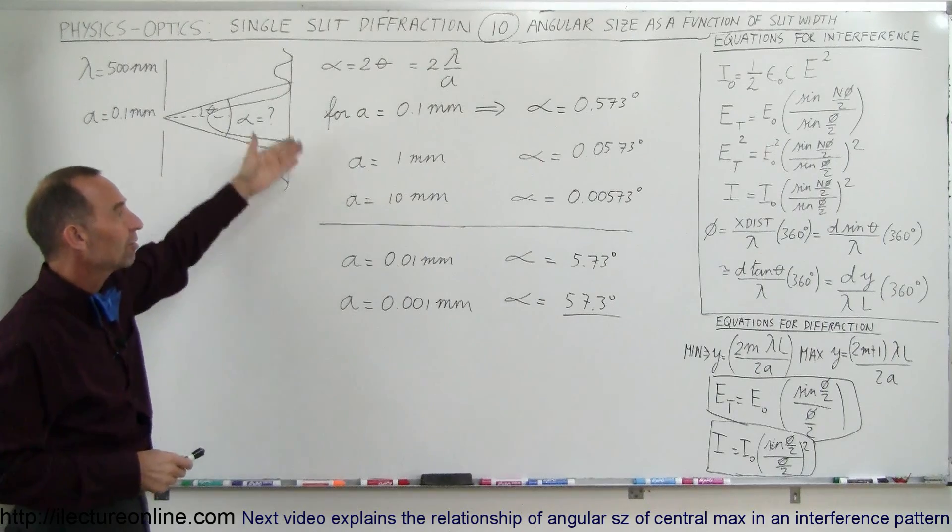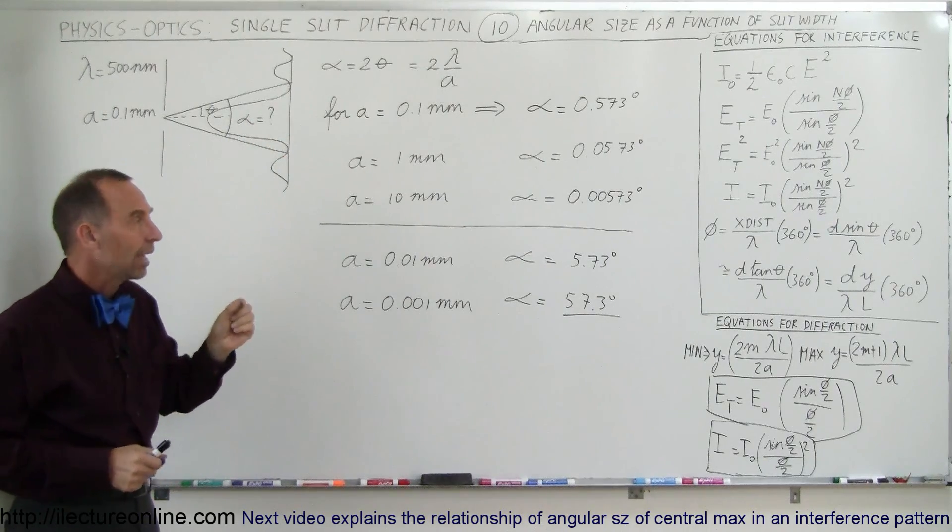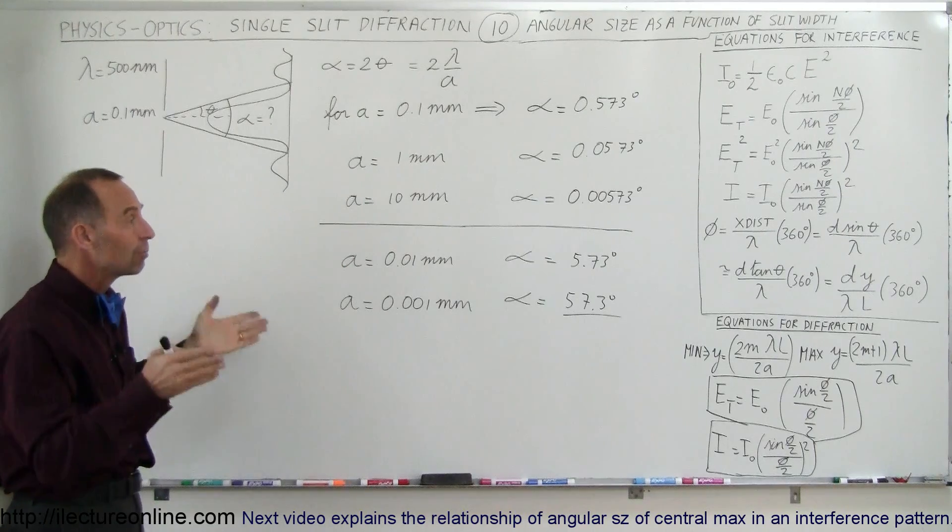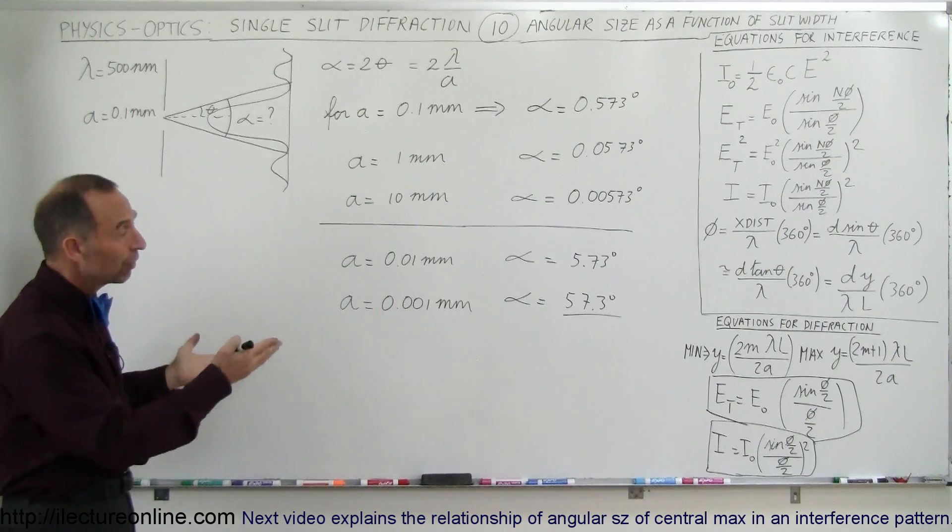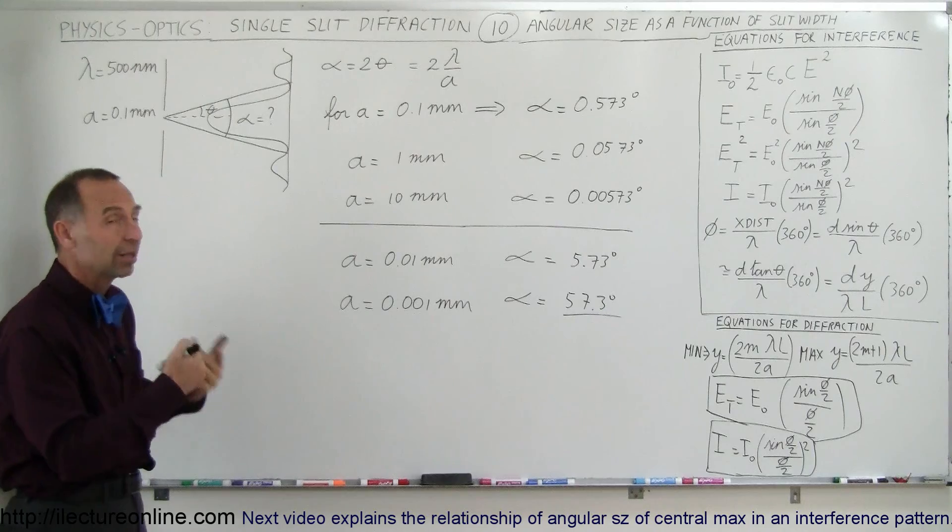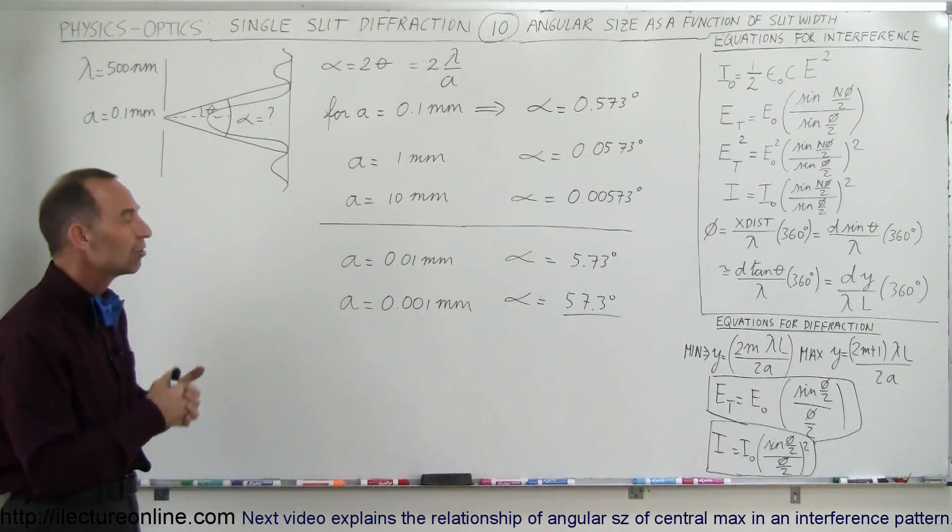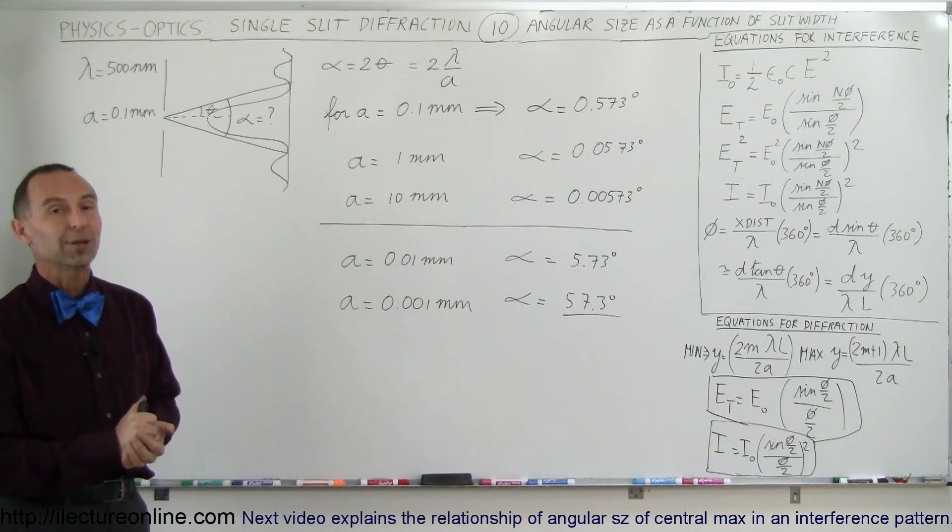So you can see that there's a tremendous effect of slit width on angular size of the central maximum, or in general the shape of the diffraction pattern. Very interesting to note that it does depend a lot upon the relative size of the slit and the wavelength of the radiation that we use. And that's how we do that.